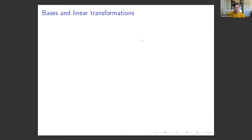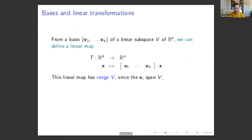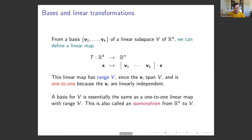From a basis V1 through Vk of a linear subspace V of Rn, we can define a linear map which sends X to a matrix whose columns are vectors V1 through Vk, multiplied by vector X on the right. This linear map has range V, because the vi's span V, and it is one-to-one since those vectors are linearly independent. A basis for V is essentially the same as a one-to-one linear map with range V — also called an isomorphism from Rk to V.